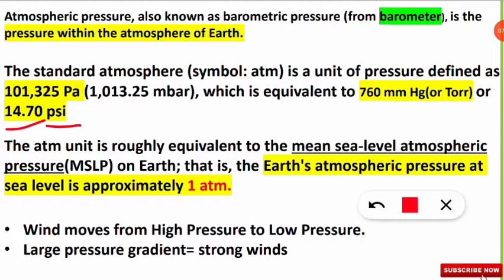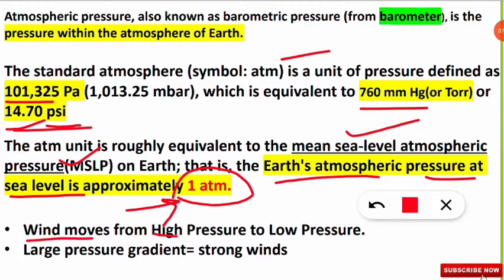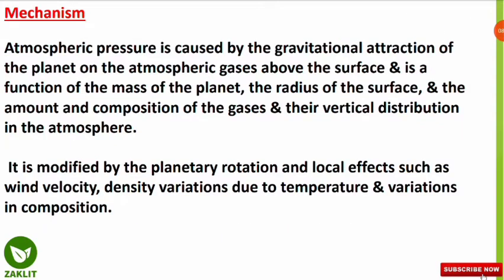MSLP is the Mean Sea Level atmospheric Pressure. The Earth's atmospheric pressure at sea level is approximately equal to 101,325 Pascal, 760 mmHg, or 14.70 PSI. Also note: wind moves from higher pressure to lower pressure. A large pressure gradient results in strong winds — these are short but exam-important points.